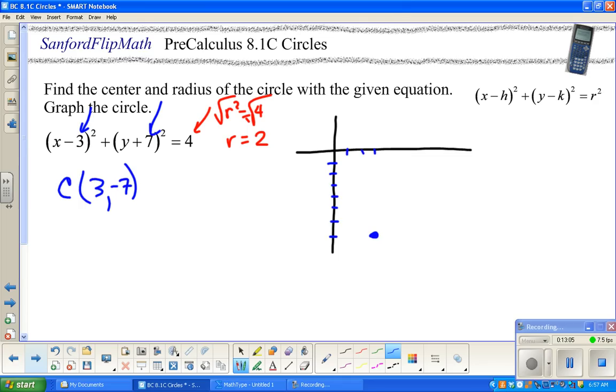So, 3, negative 7. I'm doing my graph a little goofy because I see it's in the fourth quadrant. So, there's the center. And then you just go up, down, left, and right, whatever the radius is. So, up 2, down 2, left 2, right 2. That's weird. It's kind of similar to the one I did on the other slide. So that's the center, that's the radius, and then that's the graph. That's it.